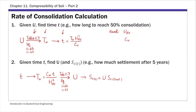The second type is given small time t, we want to find the degree of consolidation or the settlement. The path for this type is: start from small t, calculate time factor T_v, then from Terzaghi's solution (table 11.7), get the average degree of consolidation U corresponding to that time factor. If you want to find settlement, use the definition of U, which is S_c(t) over S_c(final), to find settlement. We went over one example last time.